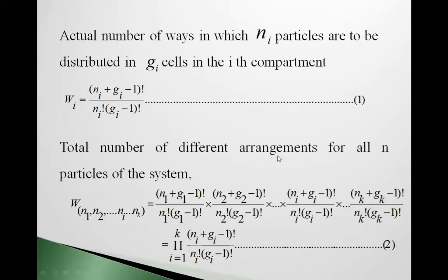The total number of different arrangements for all N particles is W(N₁, N₂, ..., Nₖ) = ∏ᵢ (Nᵢ + Gᵢ − 1)! / [Nᵢ! · (Gᵢ − 1)!], where the product runs from i=1 to K. Here we have neglected the '1' factorial. This is equation 2, expressed as a product over all compartments.